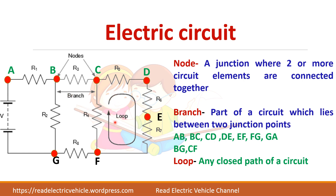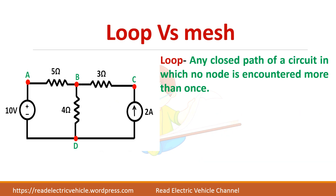Next you can see it is marked as a loop. A loop means it is a closed path. For example, A-B-G-A can be called a loop. This is also another loop. The whole thing can also be taken as a single loop — a loop must be a closed path.